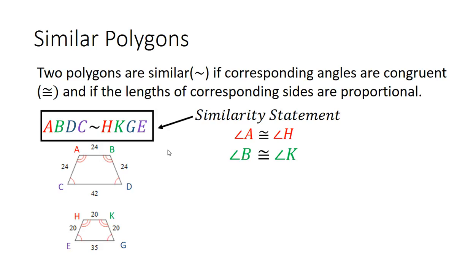Next, we have angle B is congruent to angle K — I have them both in green. B also has two arcs and K has two arcs, which tells us they're congruent. Notice in the similarity statement, B is second and so is K, so angle B is congruent to angle K.